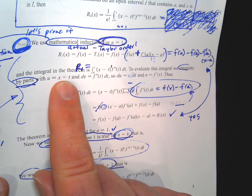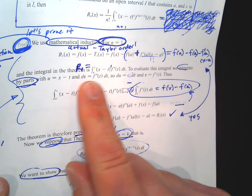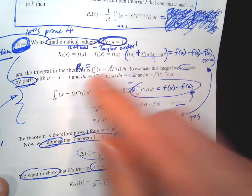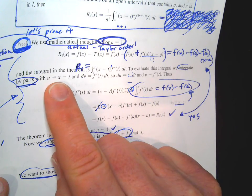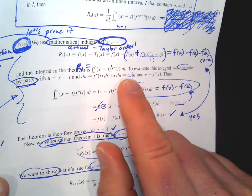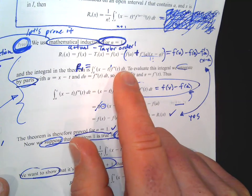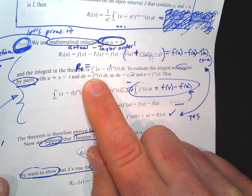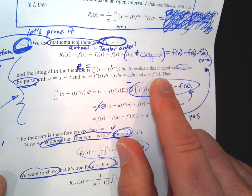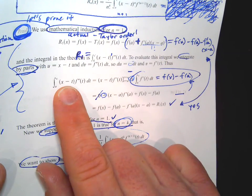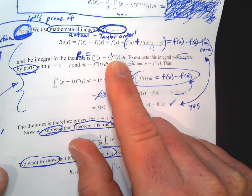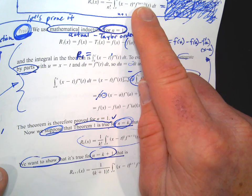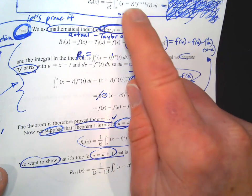For integration by parts, we're going to set u equal to x minus t and dv equal to the second derivative. You usually want to set dv to the derivative part so you can undo it. If we take the derivative of x minus t with respect to t — x is just a number — we get negative 1 dt. We integrate dv to get v, which is just f prime. This is the integral when n equals 1, so that's the second derivative — that's why it's double prime and why it is to the first power.